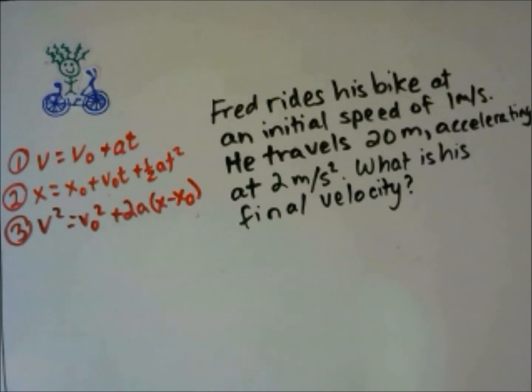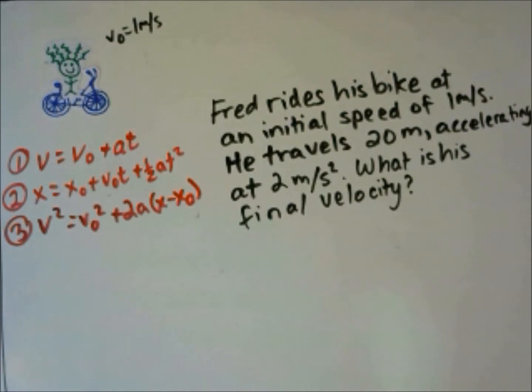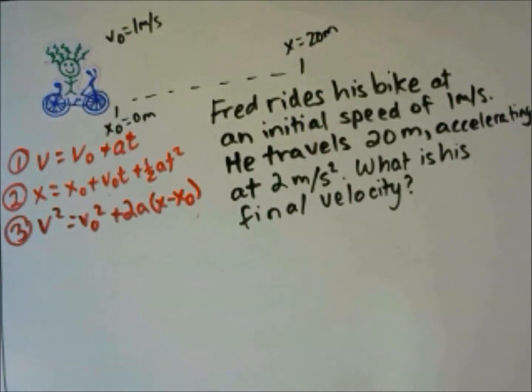Now Fred rides his bike at an initial speed of 1 meter per second. He travels 20 meters, accelerating at 2 meters per second squared. What is his final velocity?